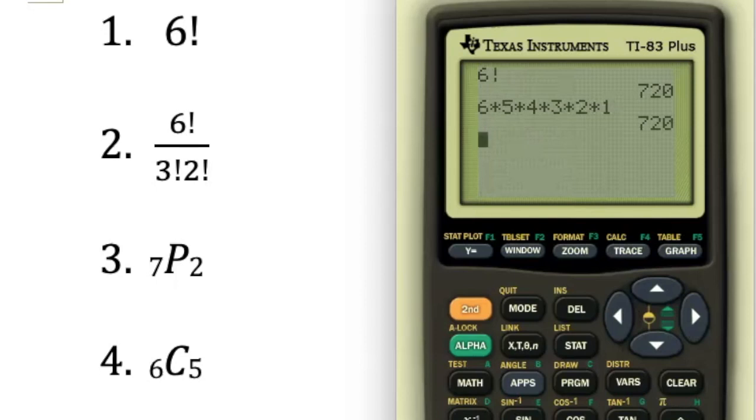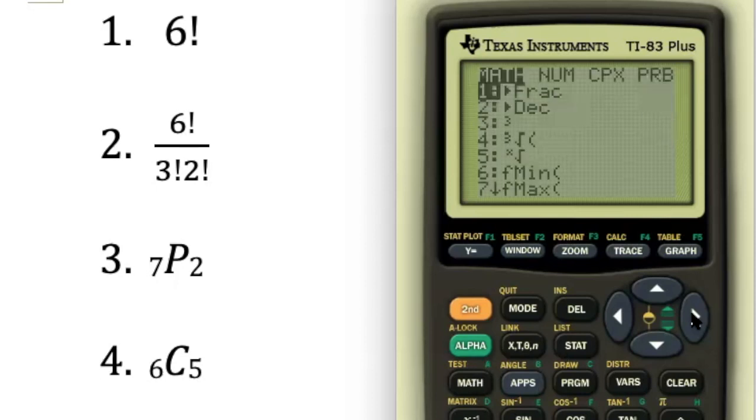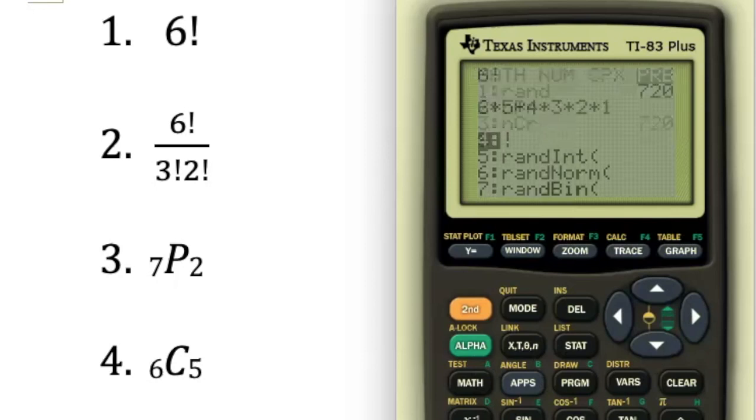In number 2, you're asked to evaluate the expression 6! divided by 3! times 2!. As I mentioned in the lesson video, you need to be very careful here. I'm going to put in my numerator, 6, go get my factorial, use my division key, and then I must put my denominator in parentheses.